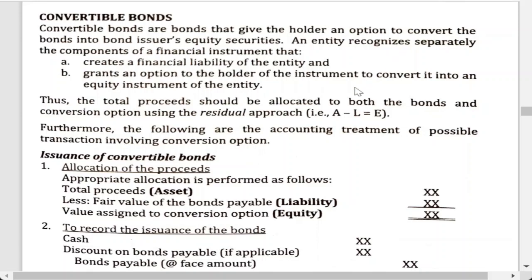Hello students and welcome back to our accounting online video lessons. This is a continuation of our lesson in financial liabilities and debt restructuring. For today, our lesson will be on convertible bonds. Convertible bonds are bonds that give the holder an option to convert the bonds into the bond issuer's equity securities. An entity recognizes separately the components of a financial instrument that creates a financial liability of the entity and grants an option to the holder to convert it into an equity instrument.